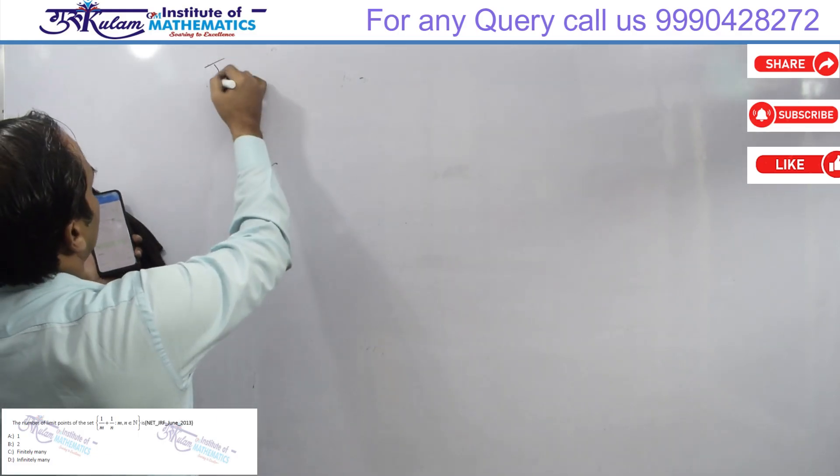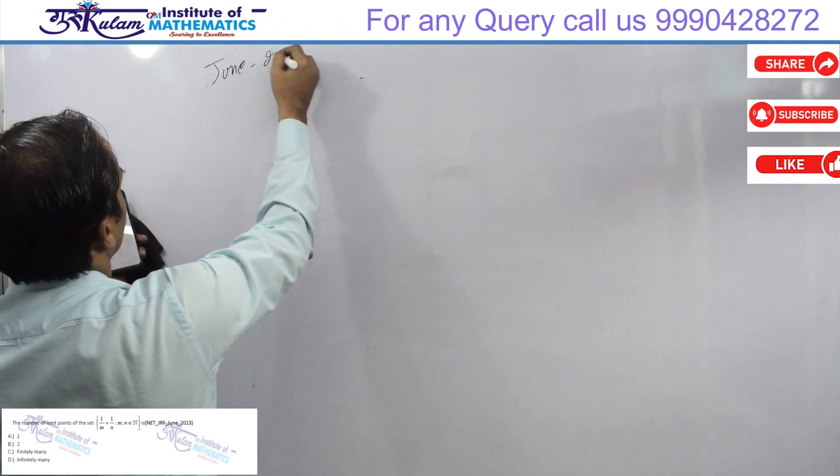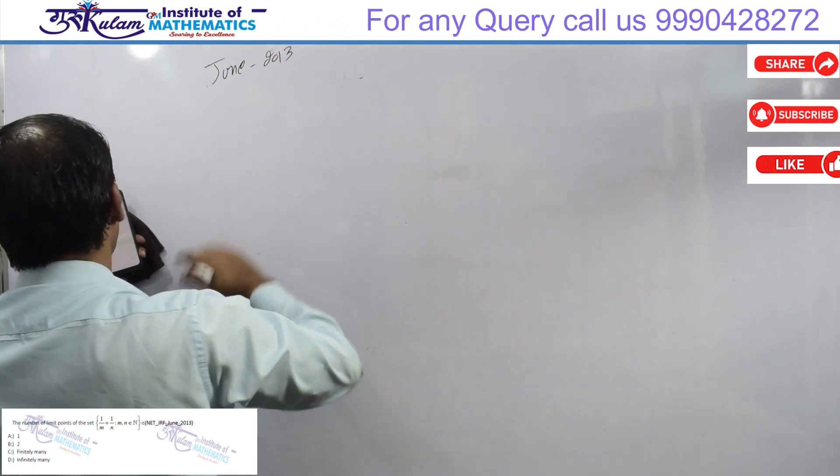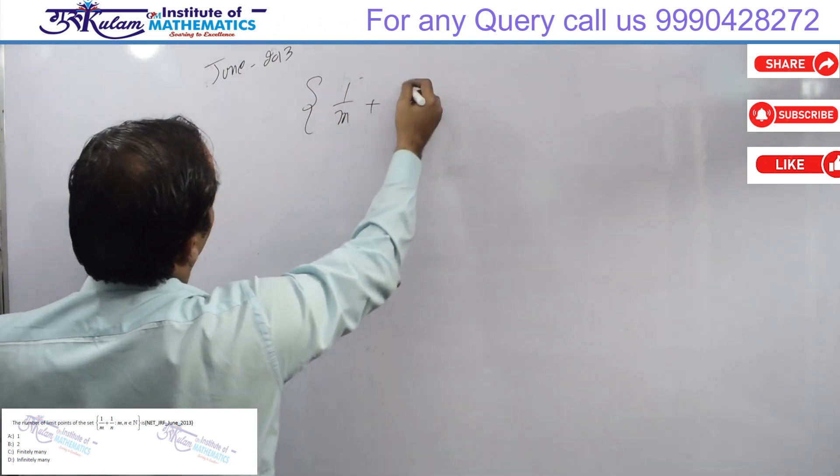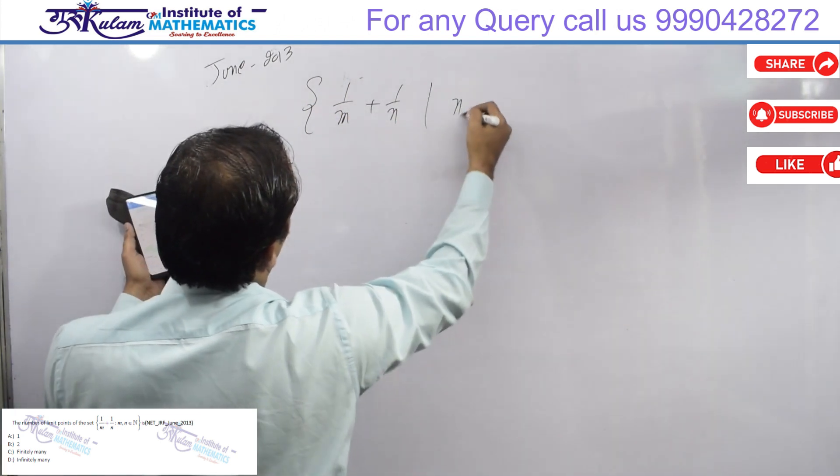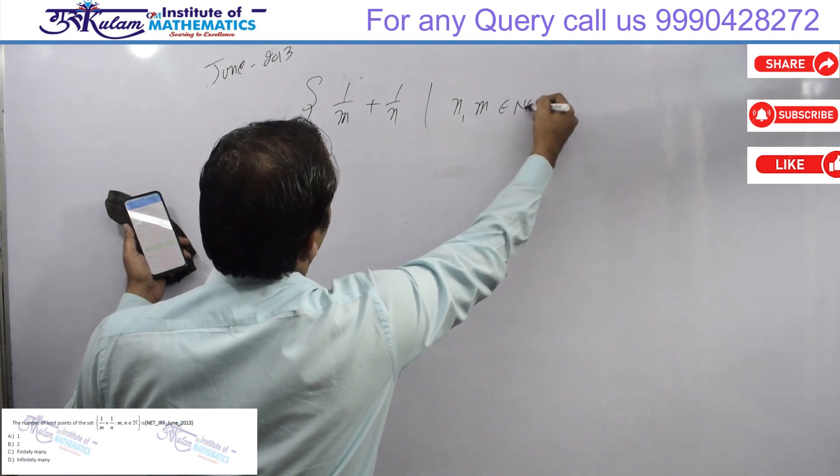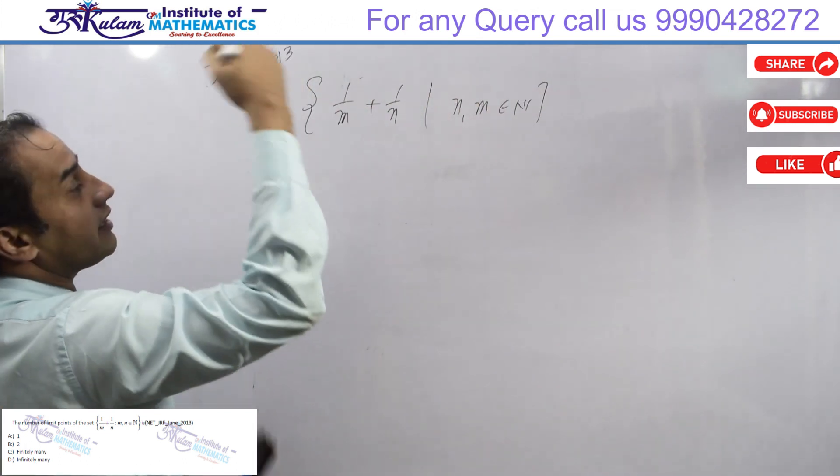This question is from June 2013. The question is: set of limit points. I have a very basic question: 1/n + 1/m where m belongs to natural numbers. We have to find the limit points.